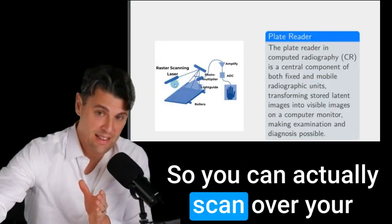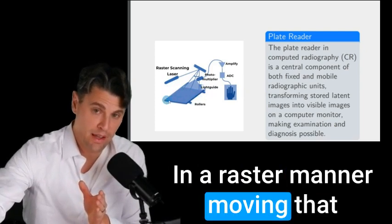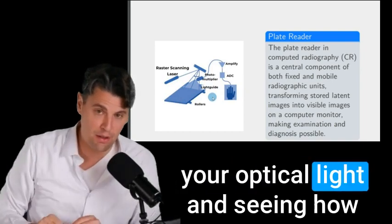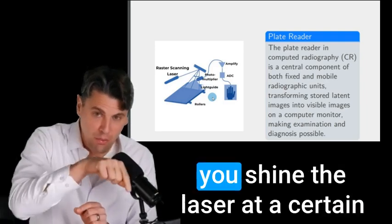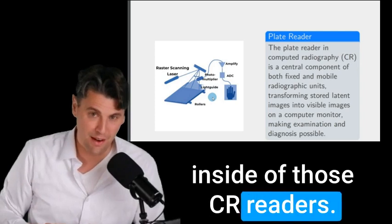So you can actually scan over your whole panel in a raster manner, moving that laser light and then collecting your optical light and seeing how much optical light comes out when you shine the laser at a certain part of the panel. That's what's happening inside of those CR readers.